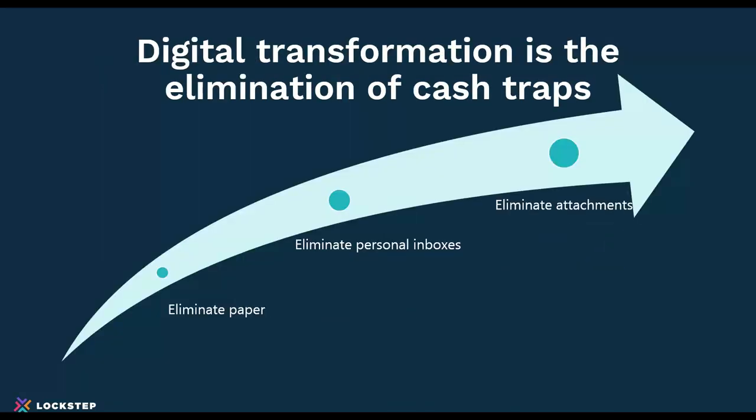Digital transformation is all about how you eliminate these cash traps. There are three specific things to think about. One is you want to eliminate paper. The second is to eliminate personal inboxes — using Outlook to manage AR collections through an individual inbox. And the final one, less apparent, is to eliminate attachments — all those PDF attachments going out in email that actually create a cash trap for you.